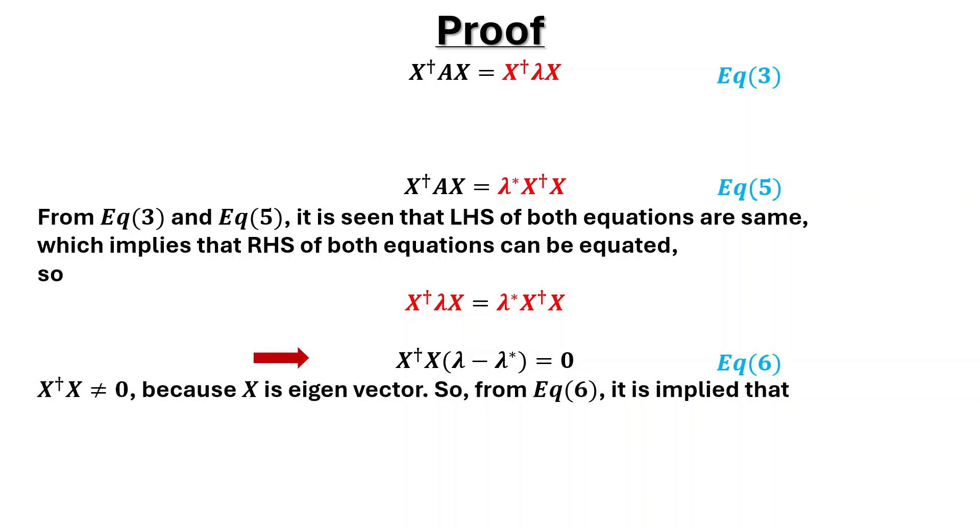Product of X dagger and X cannot be 0 because X is an eigenvector. So from equation 6, it is implied that lambda minus lambda conjugate is equal to 0, which further implies that lambda is equal to lambda conjugate as given in equation 7.